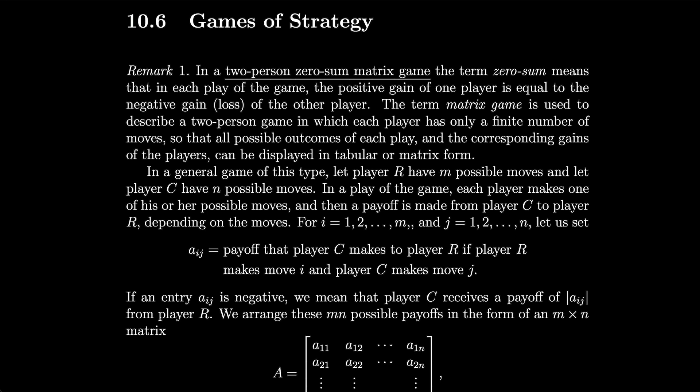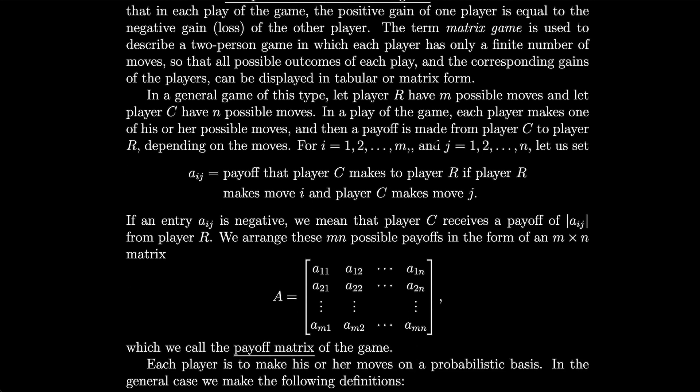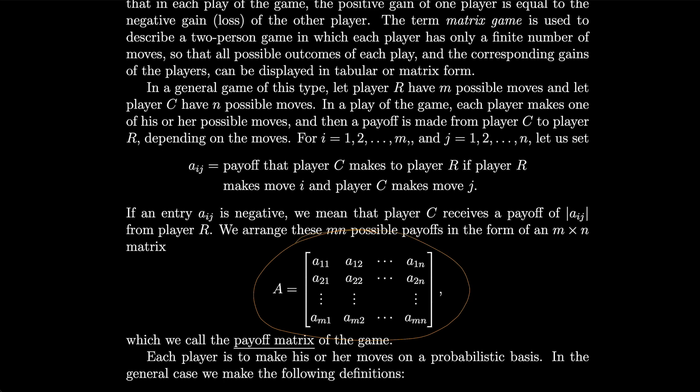If an entry aij is negative, we mean that player C receives a payoff of the absolute value of aij from player R. We arrange these mn possible payoffs in the form of an m by n matrix, given by A, which we call the payoff matrix of the game.